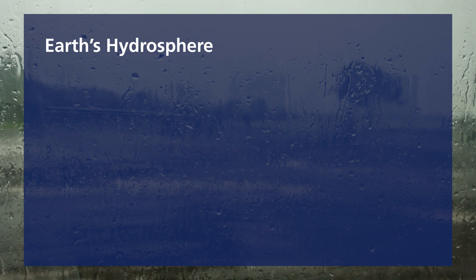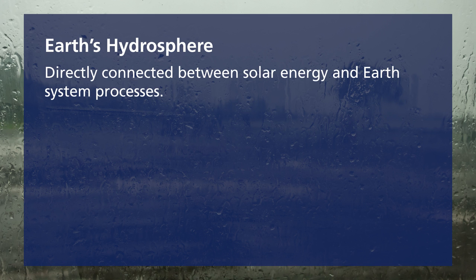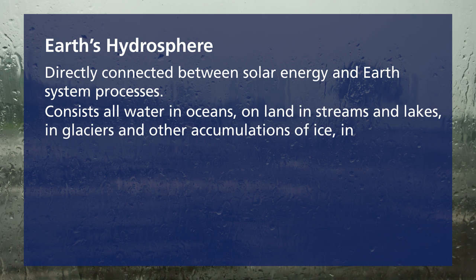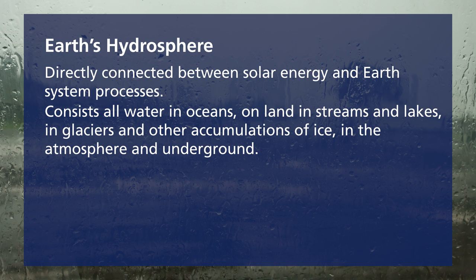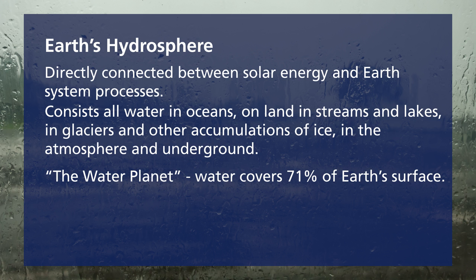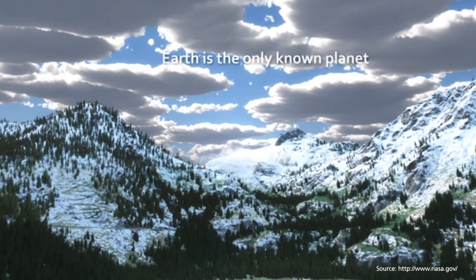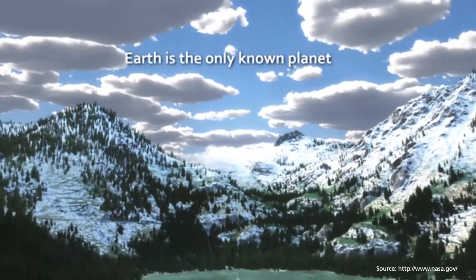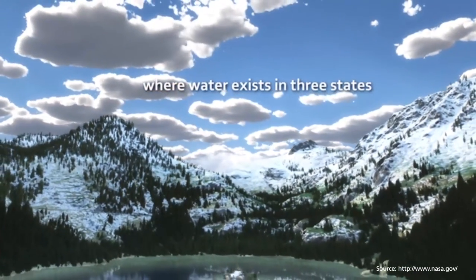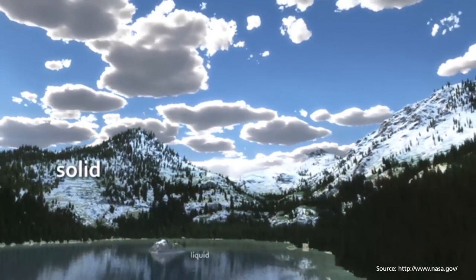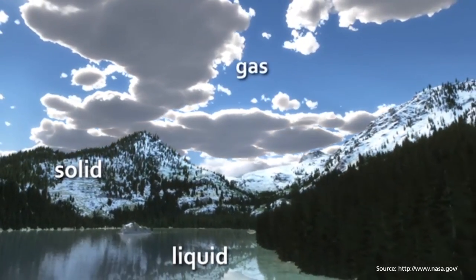Earth's hydrosphere is directly connected between solar energy and Earth's system processes. It consists of all water in the oceans, on land in streams and lakes, in glaciers and other accumulations of ice, in the atmosphere, and underground. We also call the Earth the 'water planet.' The hydrosphere covers approximately 71% of Earth's surface. The Earth is uniquely positioned in the solar system so that water exists in all three phases: solid (ice), liquid, and gas (water vapor).